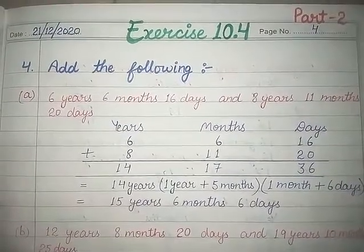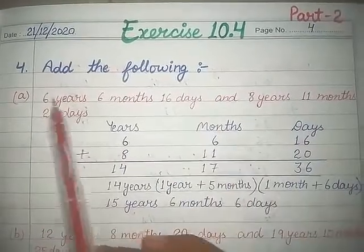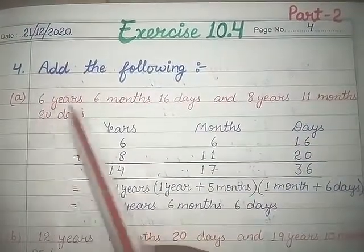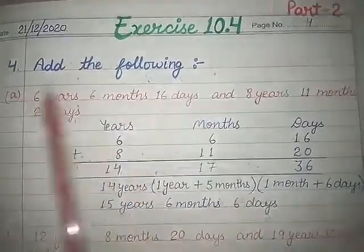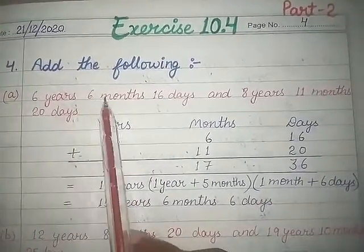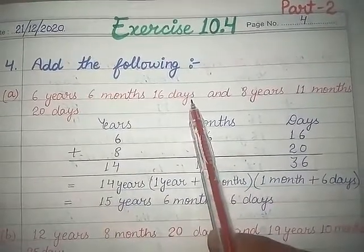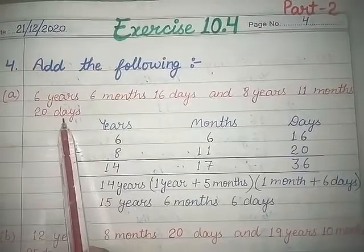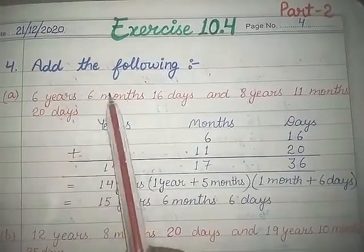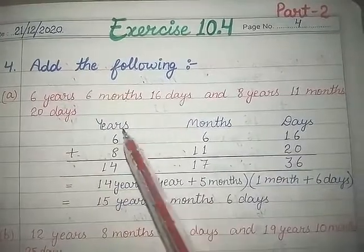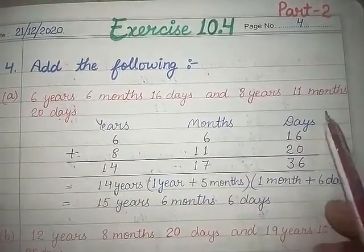Isi tarike se students aapne is table ko complete karna hai. Now let's check our fourth part, in which you have to add the following. Aapko baccho time jo hai, vo years, months aur days mein given hai, aur aapne addition karni hai. For example: 6 years, 6 months, 16 days — isme add karna hai 8 years, 11 months and 20 days. Toh pehle dekhiye aapke paas units kya kya hain — years hai, months and days hai.